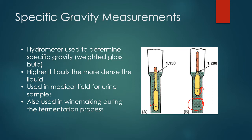Hydrometers are also used in winemaking. In the fermentation process, you can use one to see when the wine is ready — essentially, when it's done fermenting.